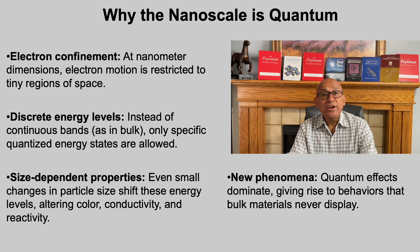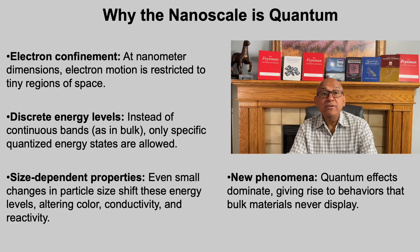When we shrink matter down to nanometer dimensions, electrons no longer behave as they do in bulk. Instead of a continuous spectrum of energies, the allowed states split into discrete levels. This quantization means that even small changes in size — a few atoms more or less — can dramatically alter a material's color, conductivity, or reactivity. At this scale, size itself becomes a design parameter, opening the door to entirely new properties.